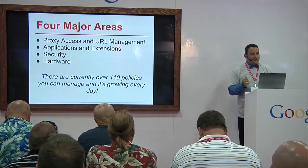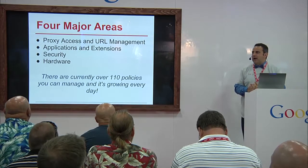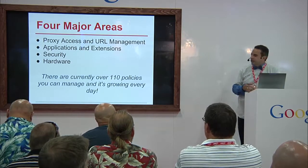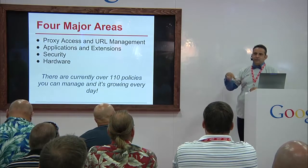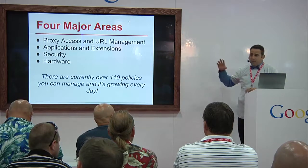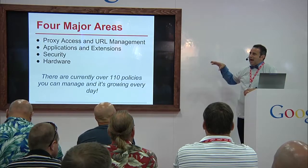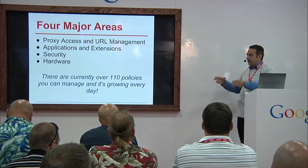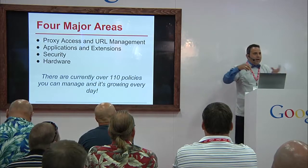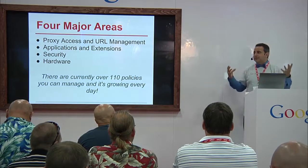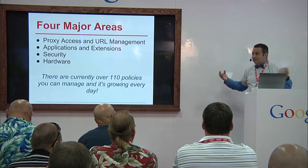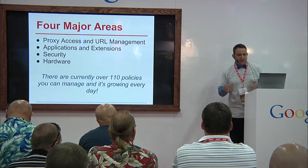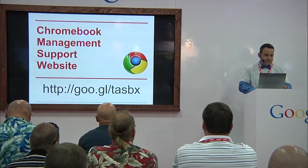Right now, at last count, there were 110 different policies you could manage — 110 different choices you have to make on these devices. It started with only 30, and it's growing each and every day. At the beginning of the year, you look at all the management policies and decide what you're going to allow, what you're going to block, how you're going to tweak things. You pretty much set it and forget it until something happens and your principal comes and says, can we lock this down?